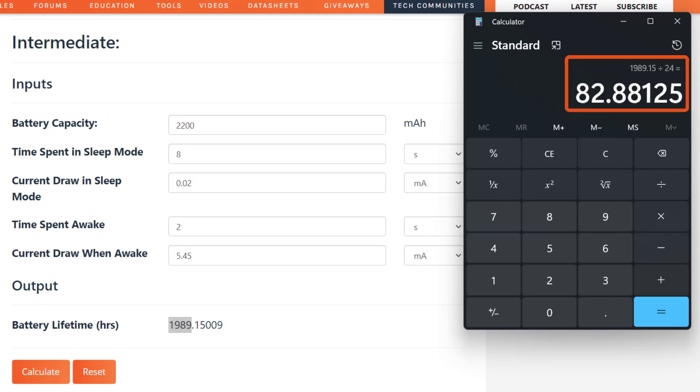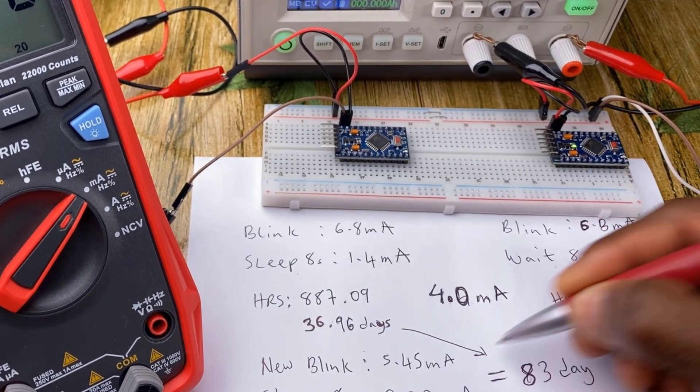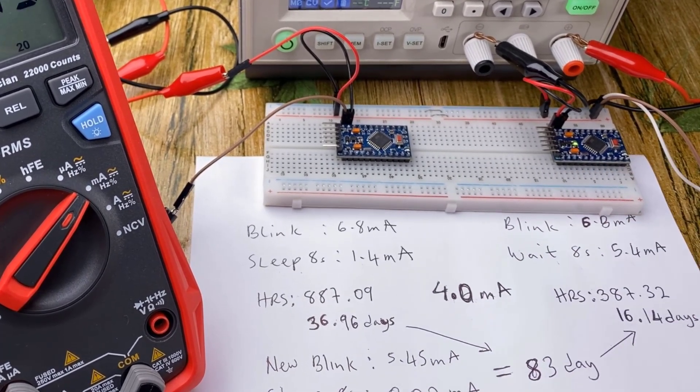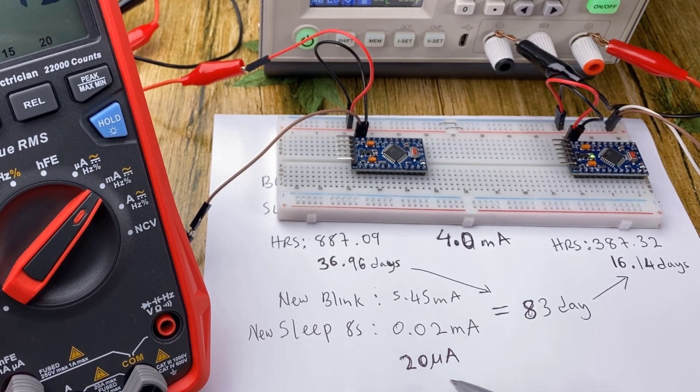And we can just see the difference between this and that. Kindly note that 0.02 milliamps is the same as 20 microamps.